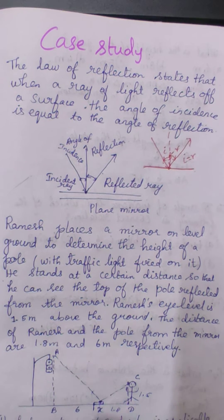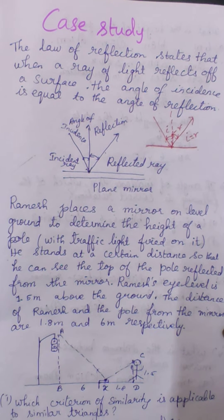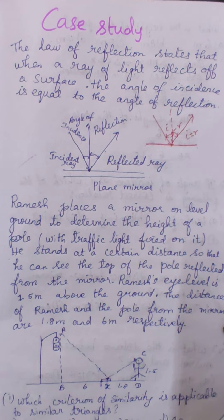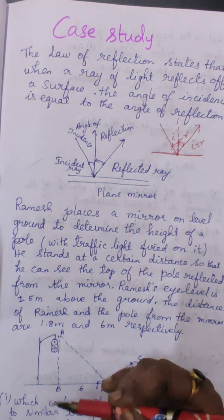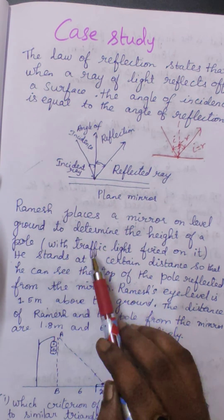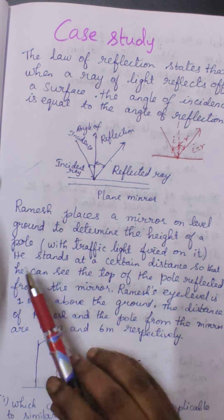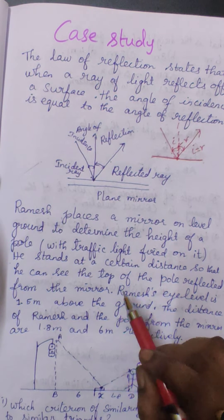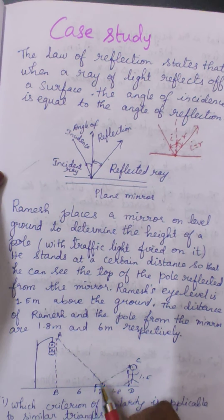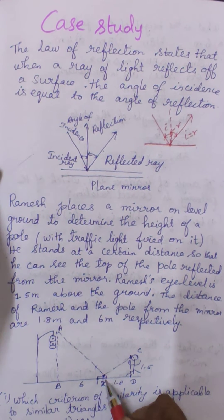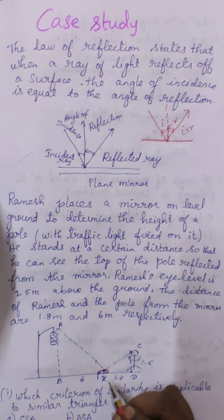Now we will move on to the case study problem. Ramesh places a mirror on level ground to determine the height of a pole — here the pole is the height of the traffic light fixed on it. He stands at a certain distance so that he can see the top of the pole reflected from the mirror. He has placed a mirror on the floor. I am naming the mirror as X.